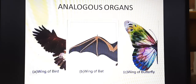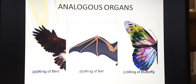Next we see analogous organs. Analogous organs — their function is the same, but their origin is different. For example, wings of bird, wings of bat, and wings of butterfly. Butterfly wings are originated from the skin, while wings of bat and bird are the modification of their limbs — that is, the forelimb or hind limb.